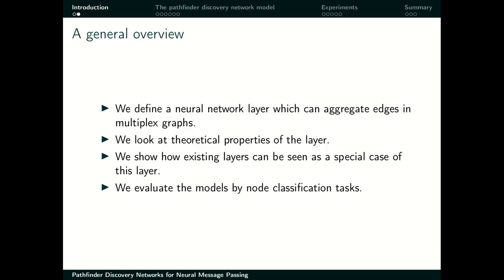From a general point of view, we will define a neural network layer — a parametric machine learning model which will be able to aggregate the edges in a multiplex graph. Then we will look at certain theoretical properties of this layer, and we will show how existing layers such as diffusion convolutions and edge convolutions can be seen as special cases of this layer. Then we will evaluate these models by some node classification tasks.